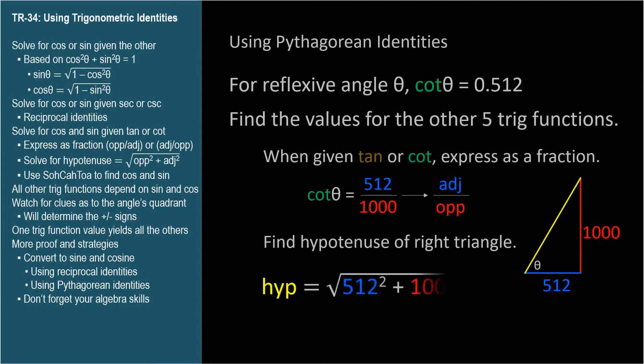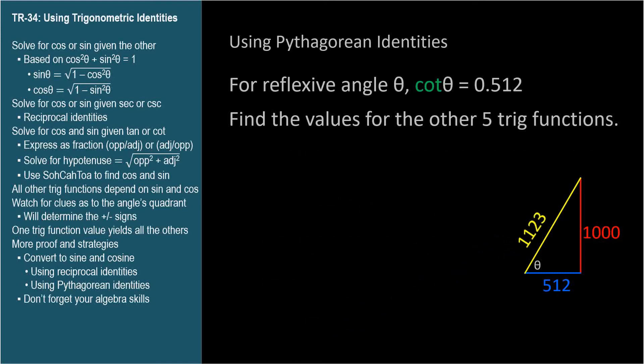Now use the Pythagorean theorem to find the hypotenuse, 1123. Well, we have all the ingredients for SOHCAHTOA, but let's take one more look at the problem we were given.